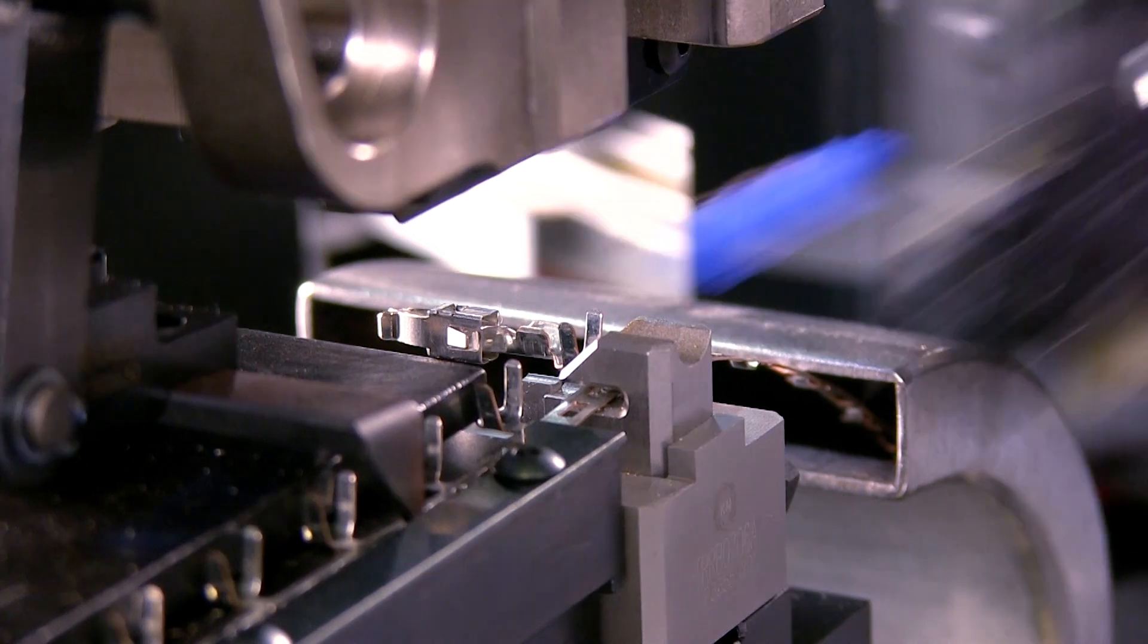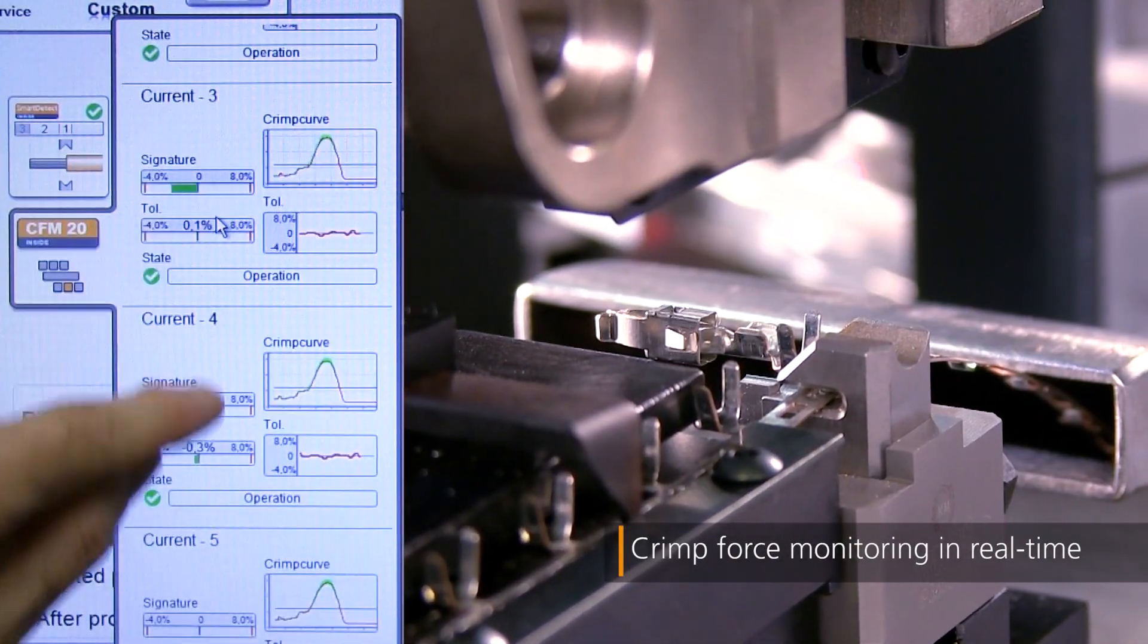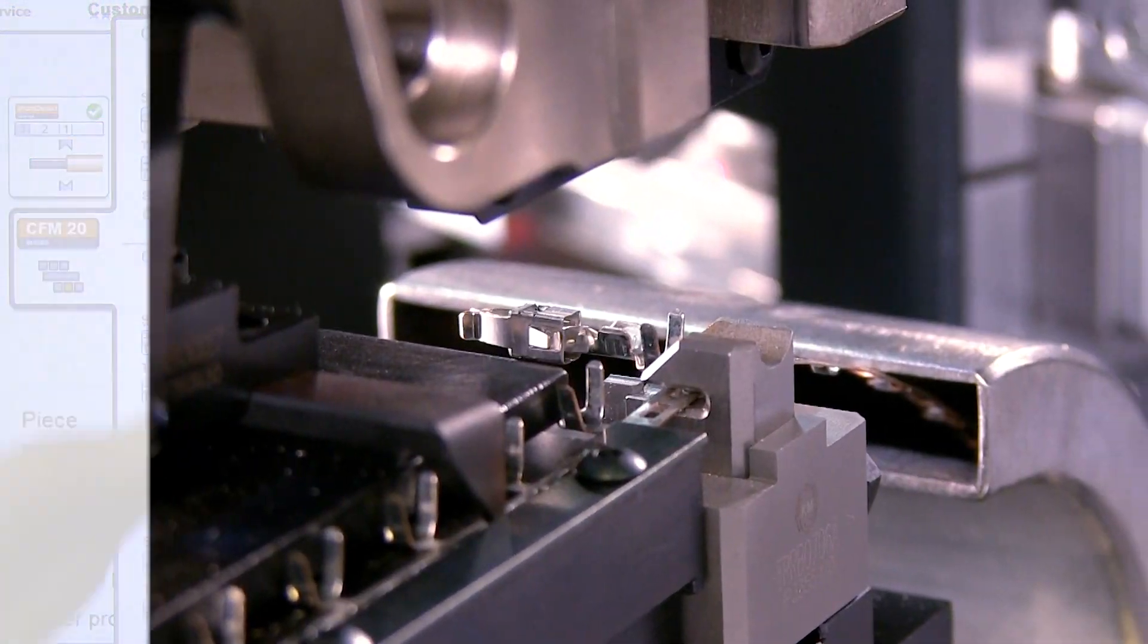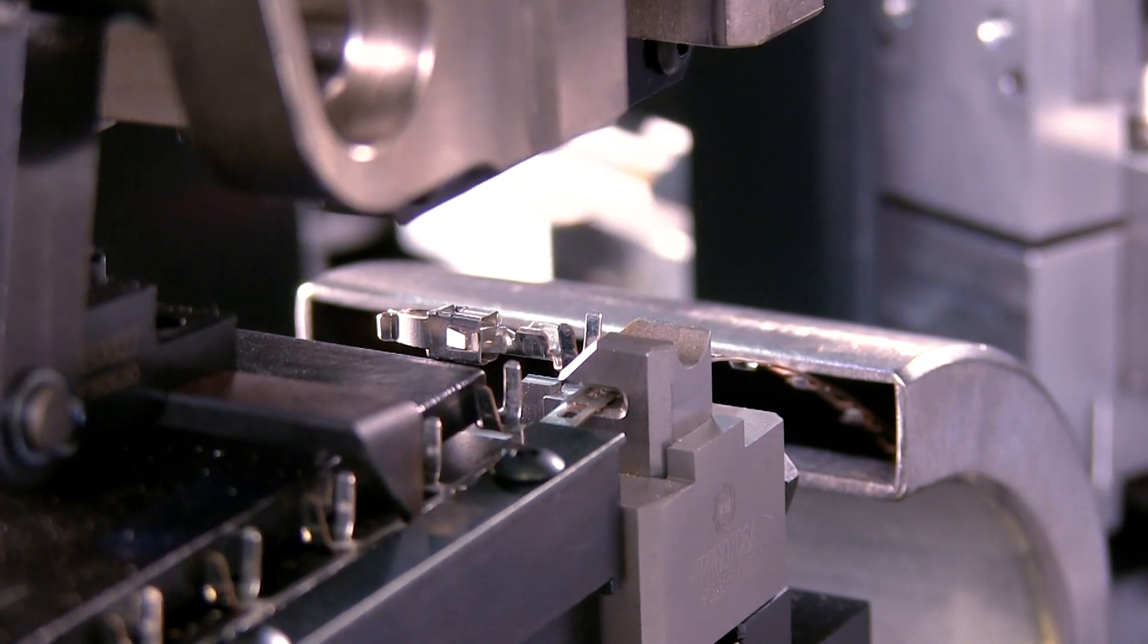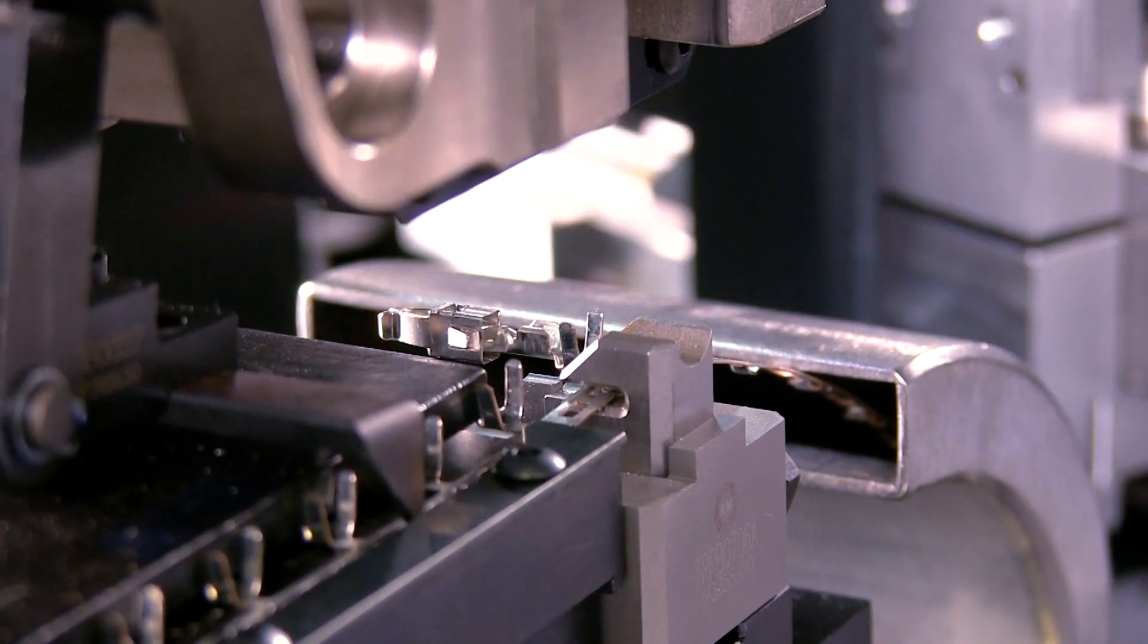Continuous Crimp Force Monitoring, or CFM, guarantees the highest levels of crimp quality. The integrated CFM unit enables the early identification of potential failure tendencies and allows for countermeasures to be taken well before scrap can be generated.